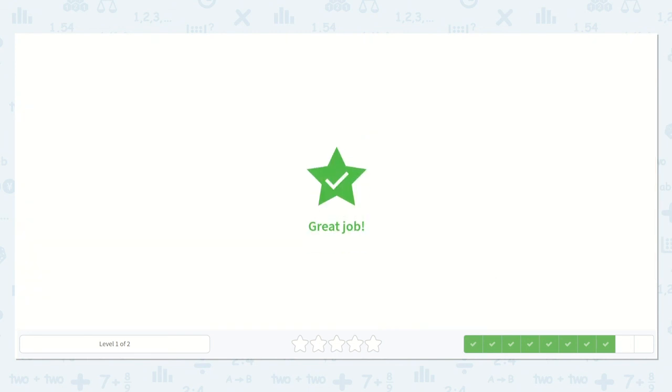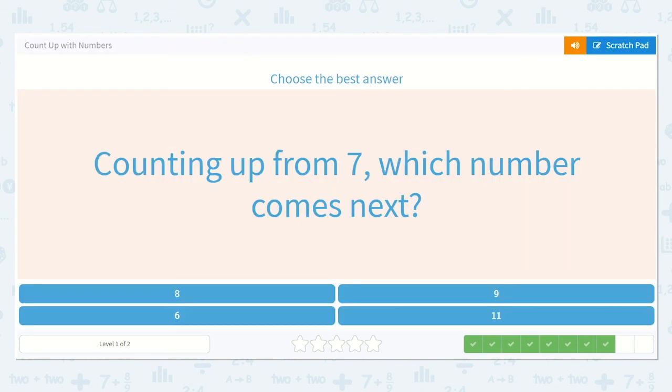Good, there's eleven. Now, counting up from seven, which number comes next? So now, try and think, what number is right after seven?